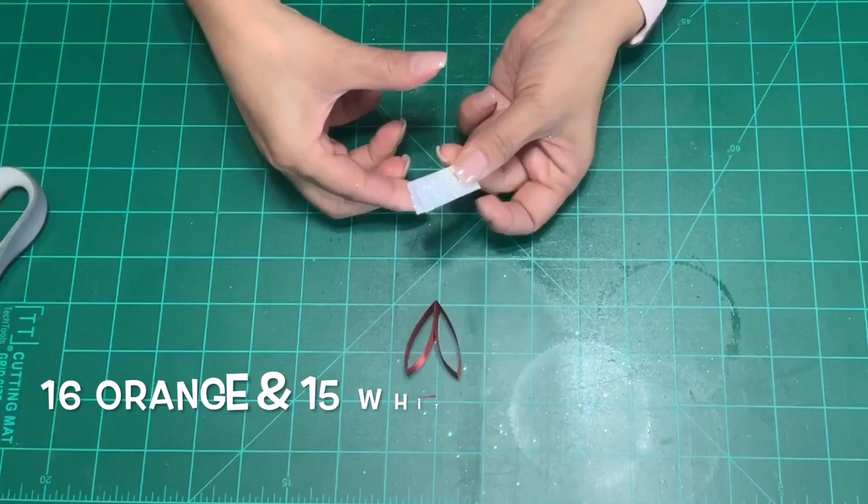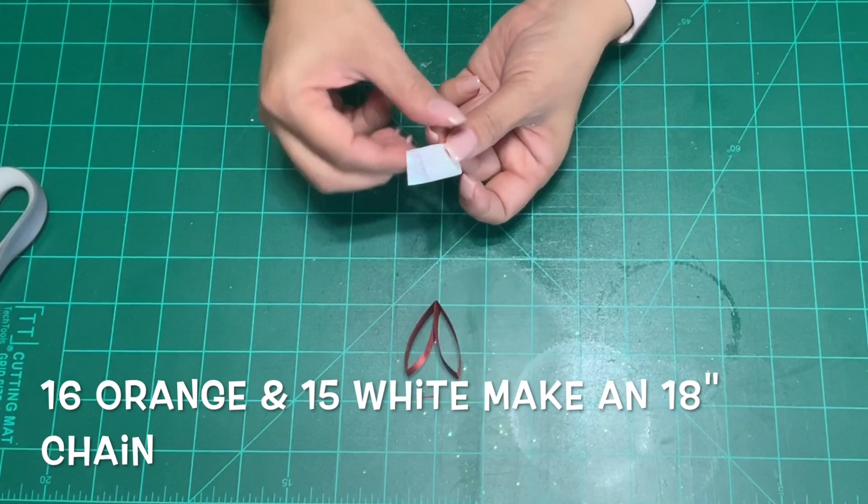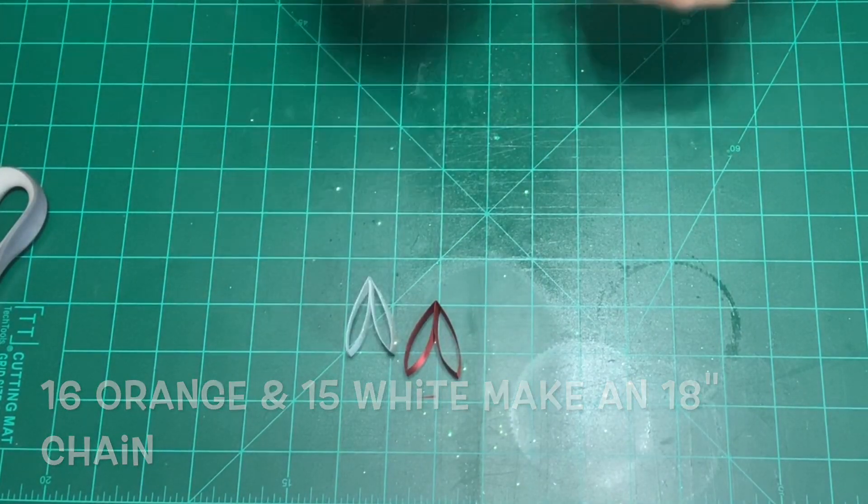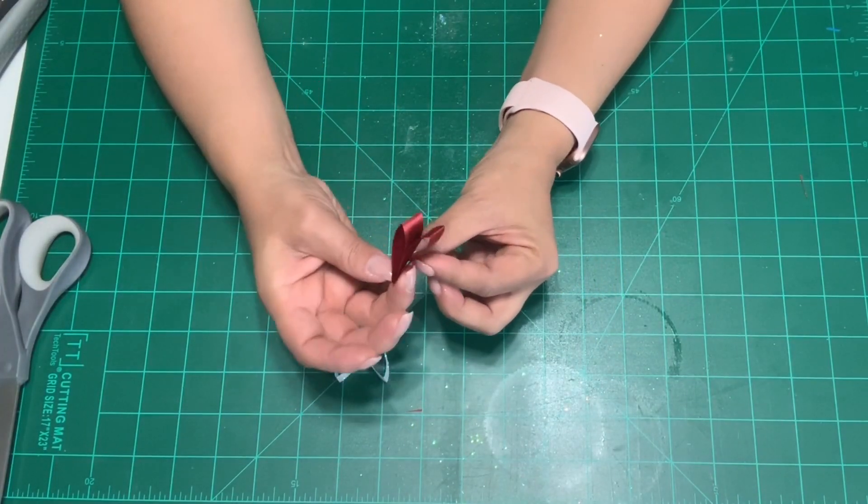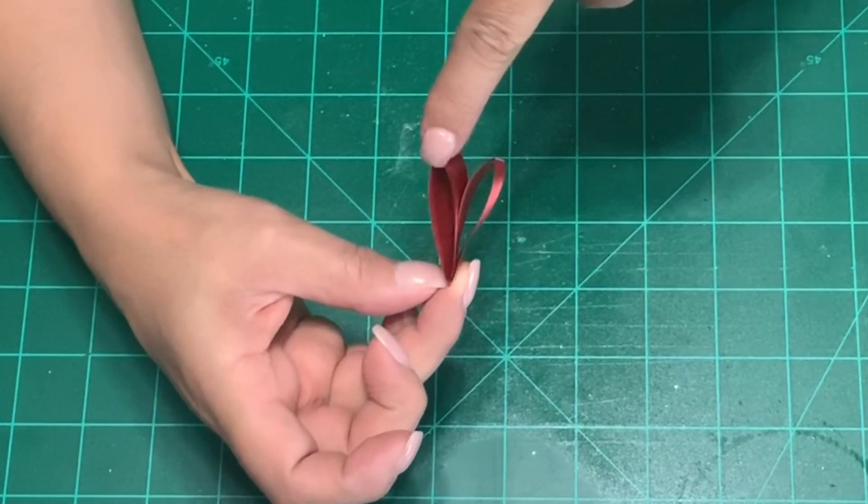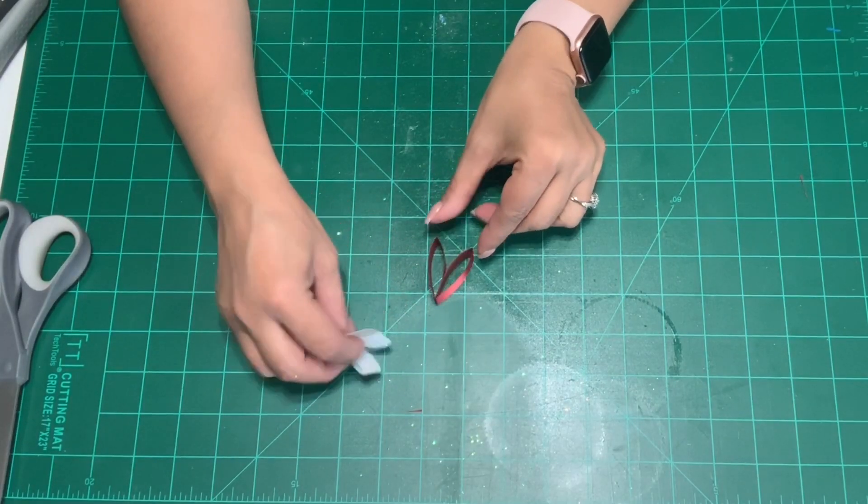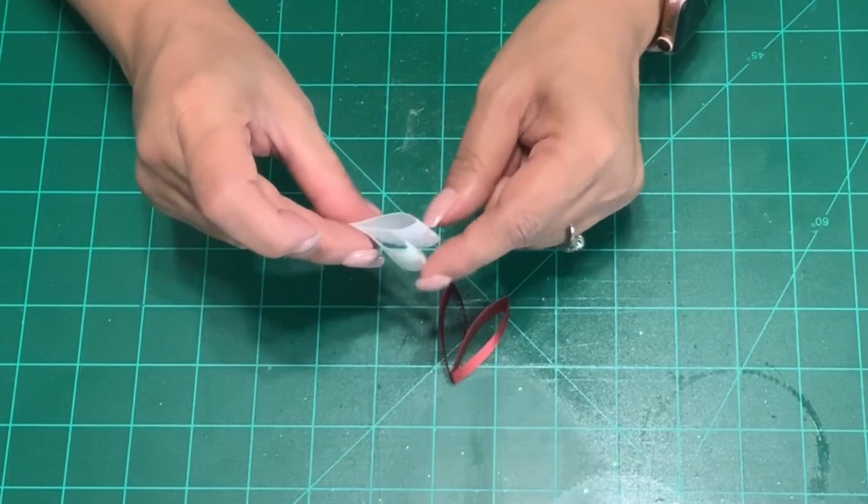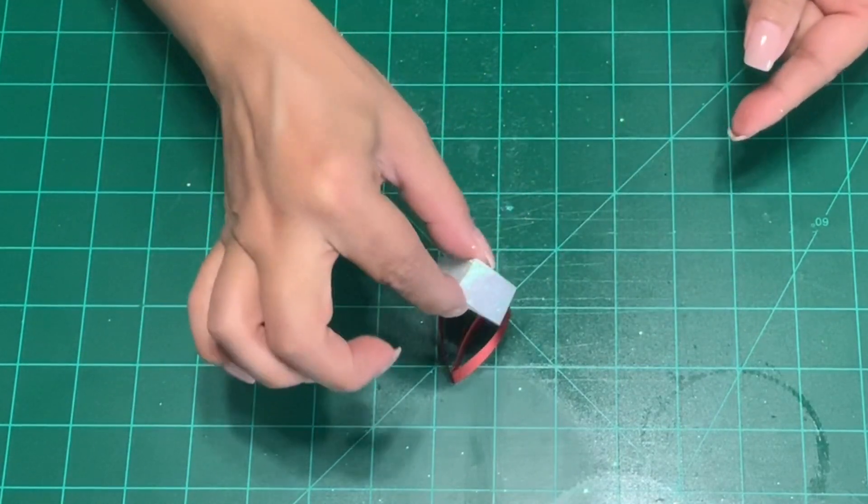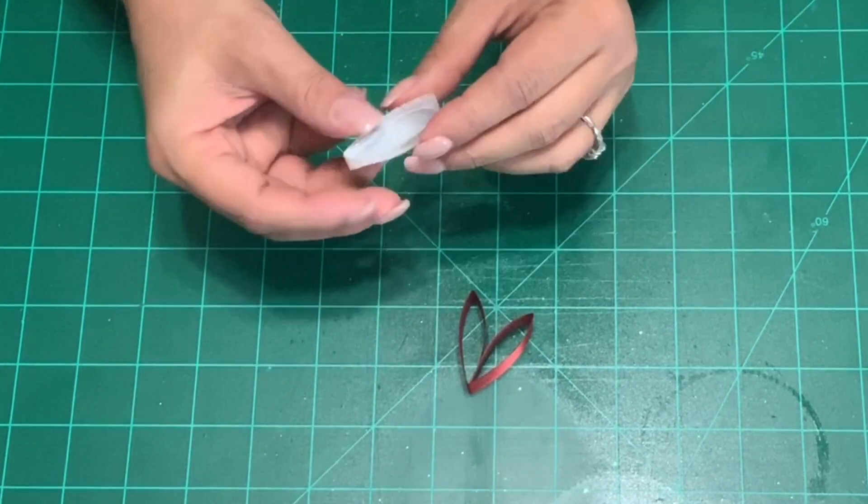For an 18 inch chain you will need 16 orange and 15 white. Now I'm going to take my orange one and if you notice it's got two holes on each side. We are going to take our white ribbon and with these two loops and those two points are going to slide right inside those holes.